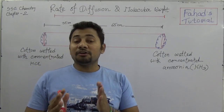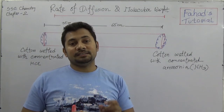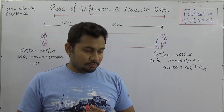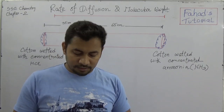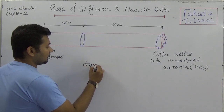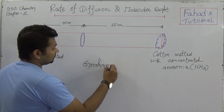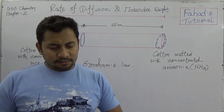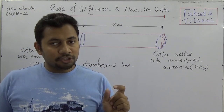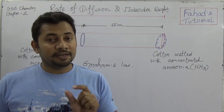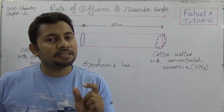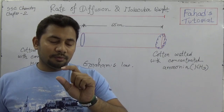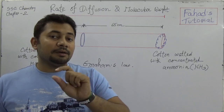According to Graham's Law, the rate of diffusion or effusion of a gas is inversely proportional to the molecular weight of that gas. So what is molecular weight, and what is the rate of diffusion?